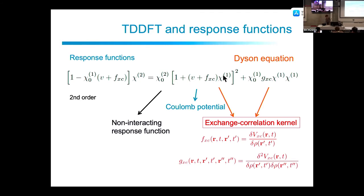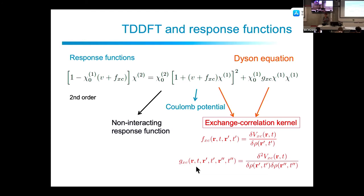The second-order equation is more complicated because it involves the square of the fields and an extra term depending on gxc — the second functional derivative of the exchange-correlation potential. We have fxc at first order and gxc at second order. Currently there is no approximation available for gxc, so in practice gxc is set to zero.